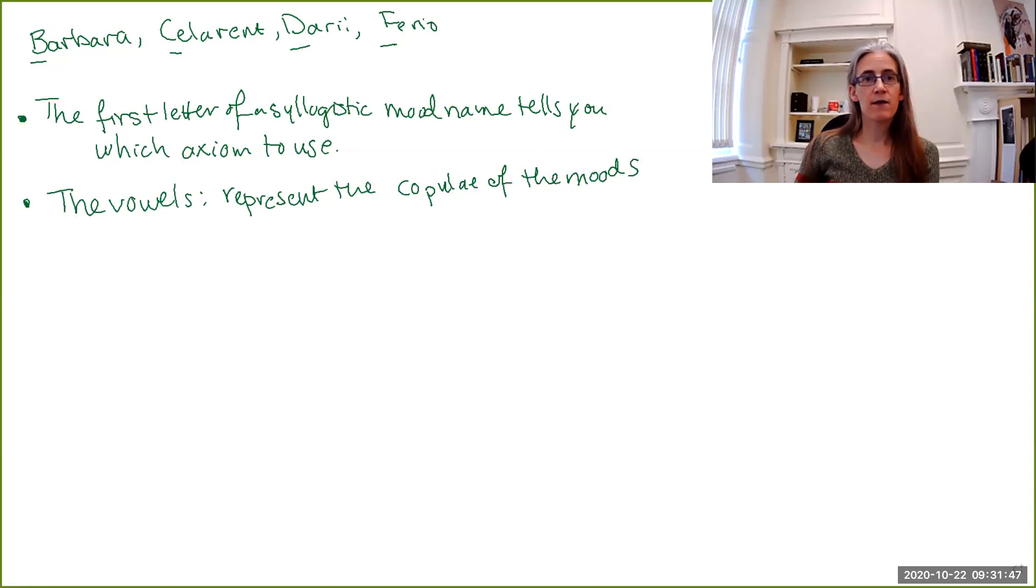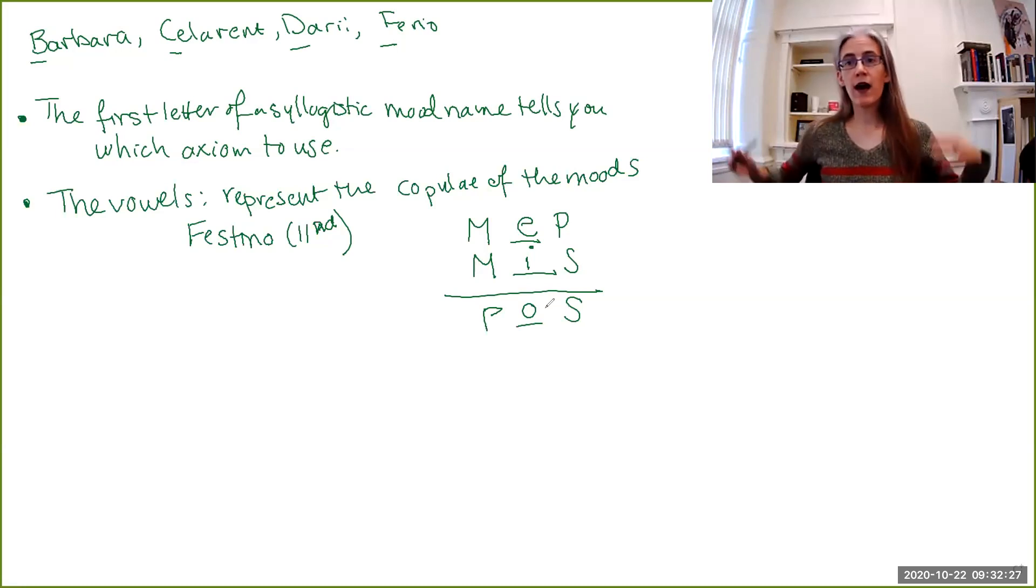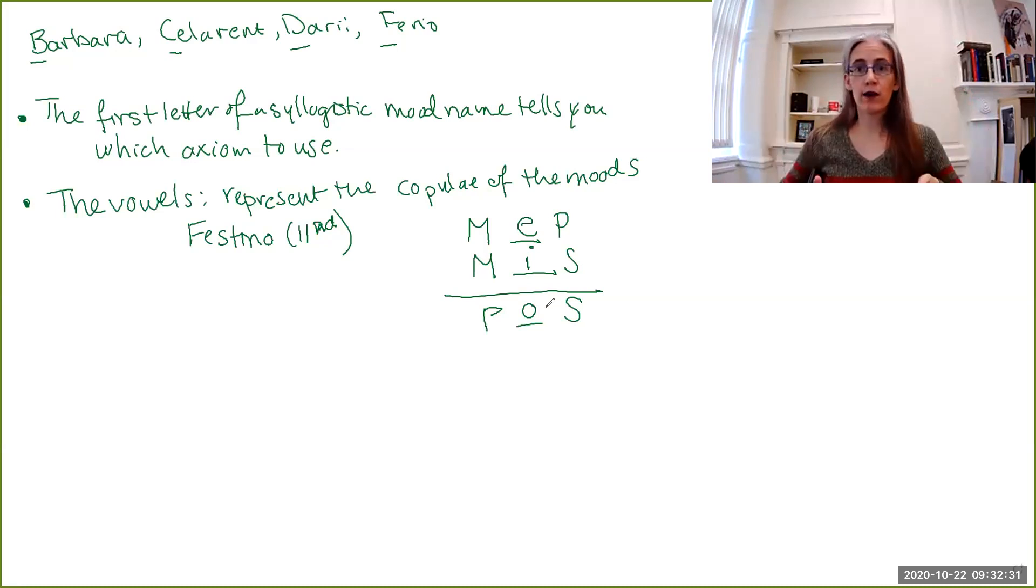So for instance, if we have say Festino, which is a second-figure syllogism, then you know that Festino has, because it's second-figure, it's going to have something of this form. So the middle term is the predicate in both of the premises. Then you just look at the vowels. So the first vowel is E. So the major claim is an E-claim. The second vowel is I. So the minor premise is an I-claim. And the conclusion is an O-claim, because the last vowel of Festino is an O. So once you have your schematic figure, the names will tell you what are the copuli that go in. You just read them across in order that they appear.